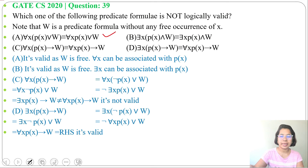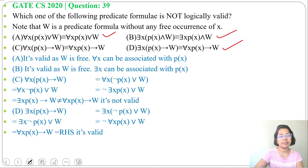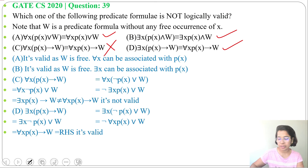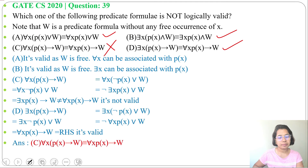Option A is logically valid. Option B is logically valid. Option D is logically valid. While option C is not logically valid, so the answer is option C.